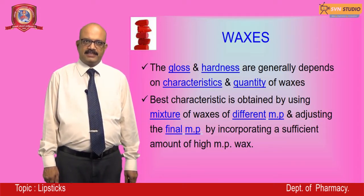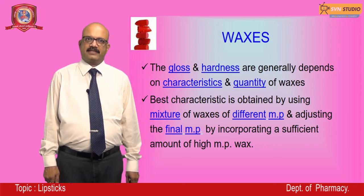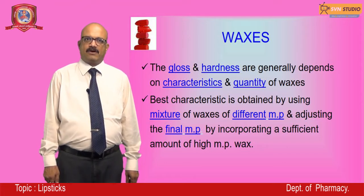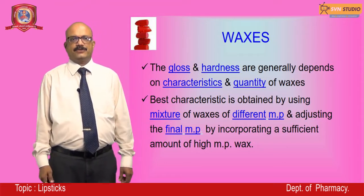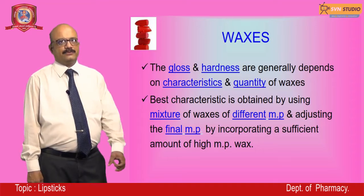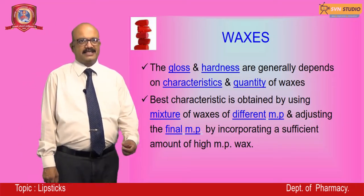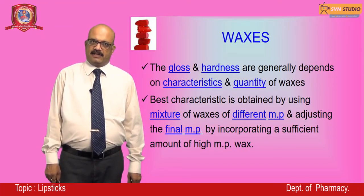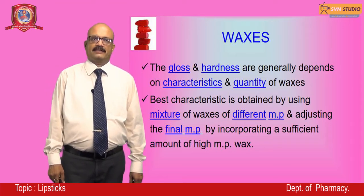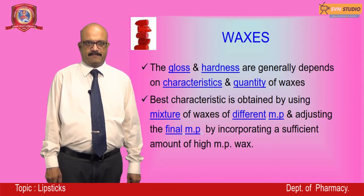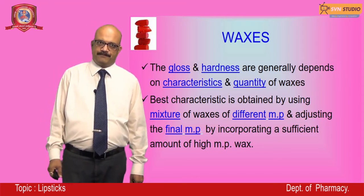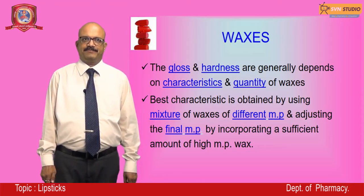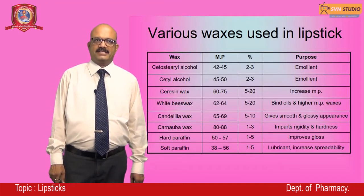The gloss and hardness generally depend on the characteristics and quantity of the waxes used. The best characteristics are obtained by using a mixture of waxes — using two different waxes achieves the optimum desirable glossiness and hardness. These waxes should have different melting points, and the final melting point should be adjusted by incorporating a sufficient amount of high melting point wax.